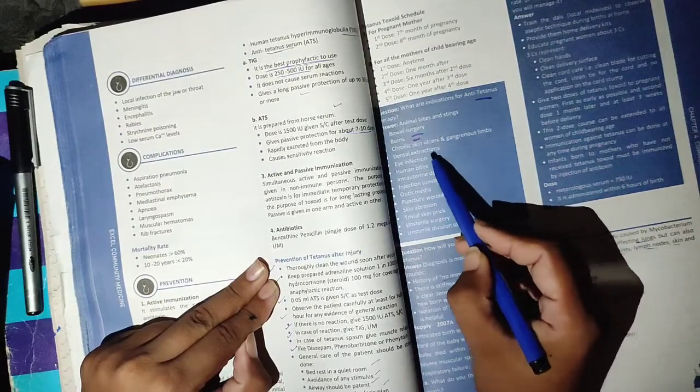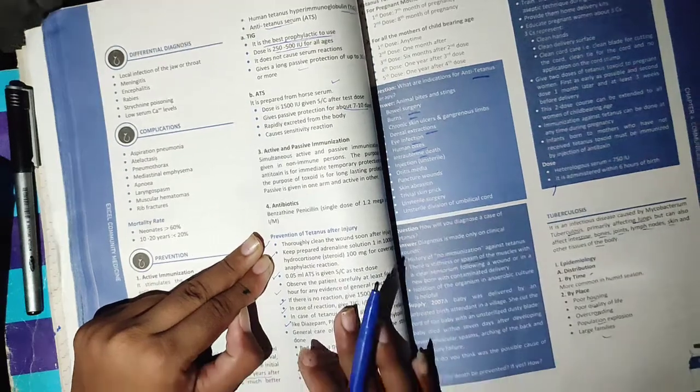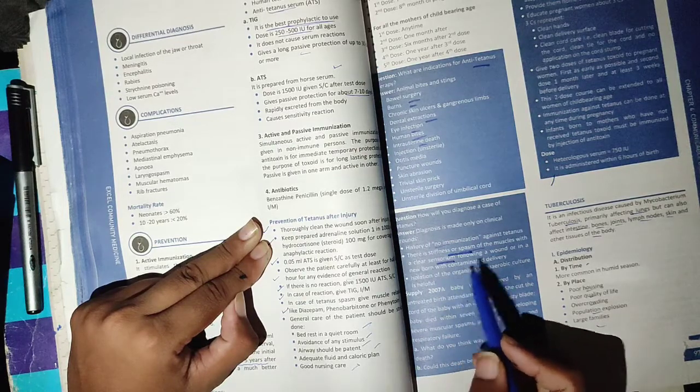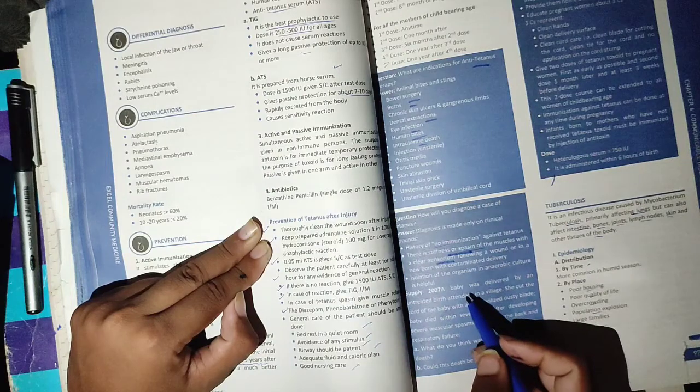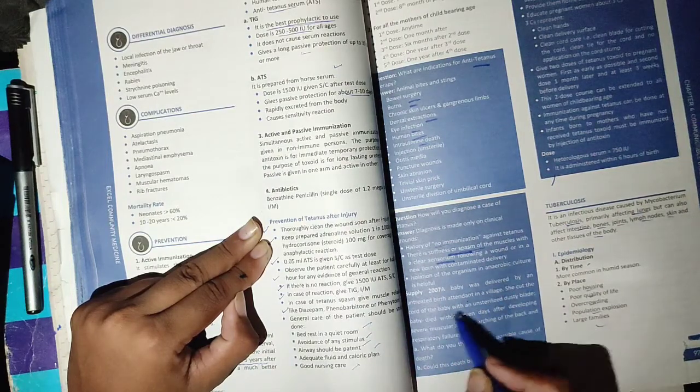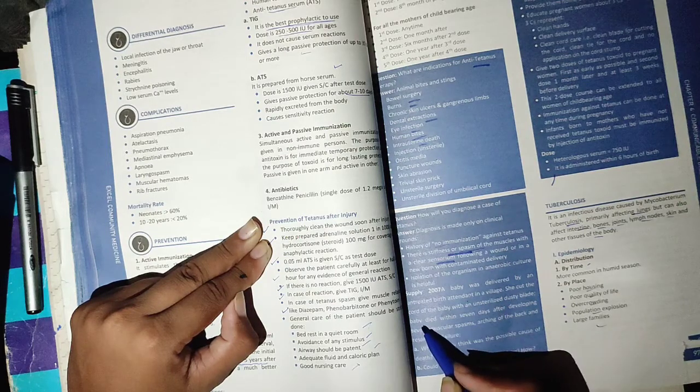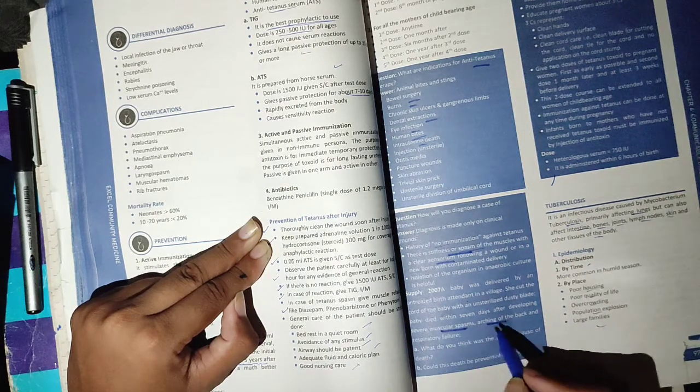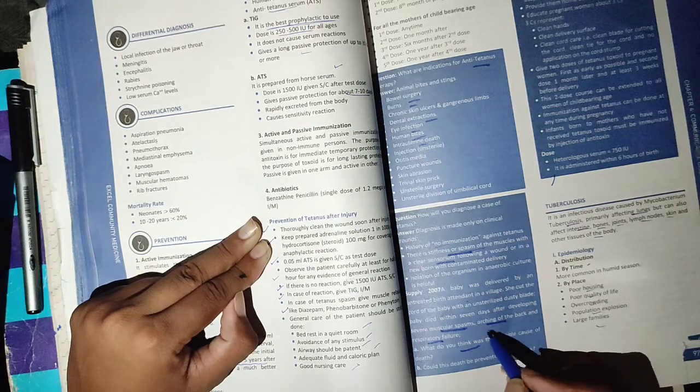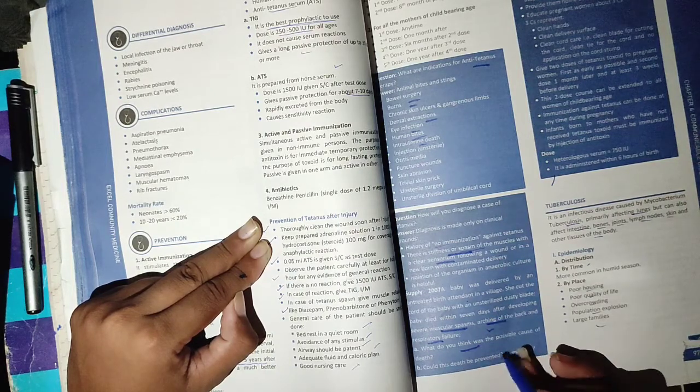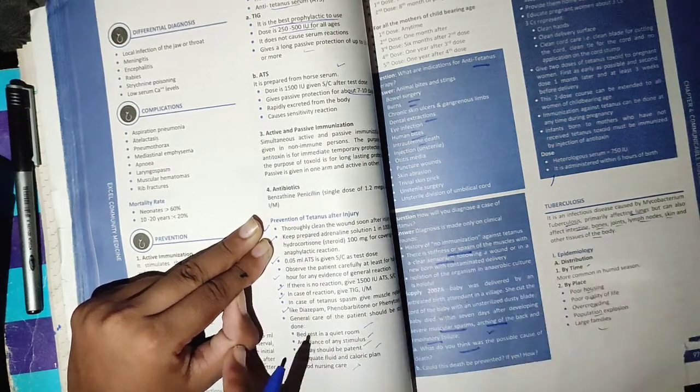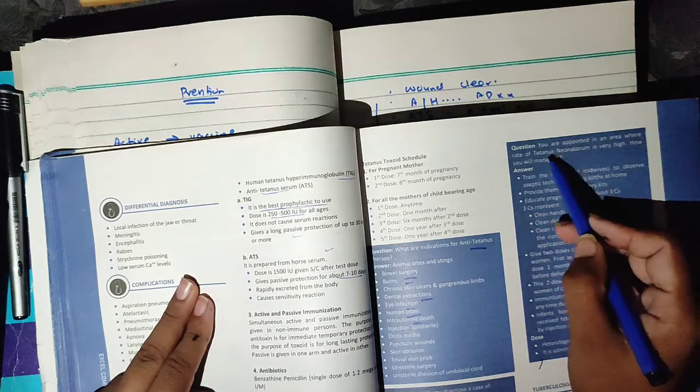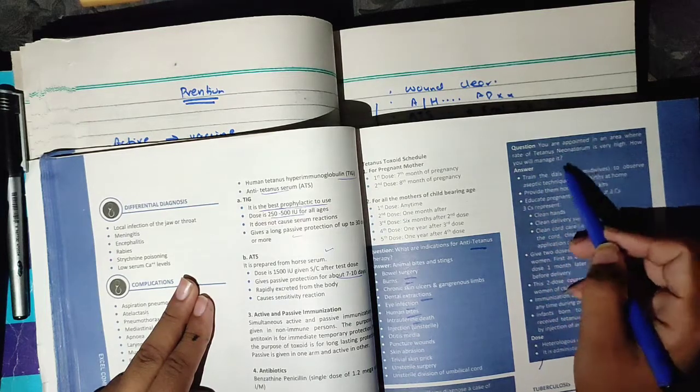Now the indications for anti-tetanus: if there's bowel surgery, burn, dental extraction, eye infection, bite, or something similar, you need to give it. How will you diagnose a case of tetanus? I've told you: history of no vaccination, muscle stiffness, sensorium will be fine, and there'll be opisthotonos and risus sardonicus. A baby was delivered by an untrained birth attendant. She cut the cord with an unsterilized dirty blade. Baby died within days after muscle spasms and arching of the back, which is opisthotonos, and respiratory failure. What is your diagnosis? Neonatal tetanus. Can you prevent this death? Yes, we can. If we diagnose early, we can give vaccine and immunoglobulin.